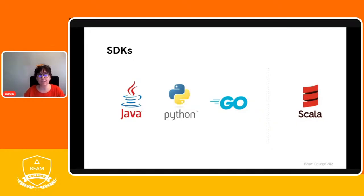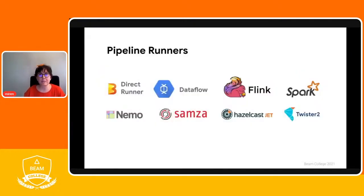Out of those three SDKs, the most mature one is the Java SDK. Spotify uses Apache BIM heavily to build their data processing pipelines and has also developed Scio, which is a Scala API. You can execute pipelines on a wide variety of runners. Examples of those are Cloud Dataflow, Apache Flink, and Apache Spark. Each runner provides a different implementation of the Apache BIM model. If you want to know which capabilities of the model are implemented by each runner, you simply need to go to the Apache BIM website and check the Apache BIM capability matrix.